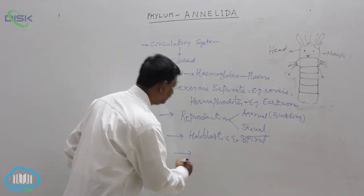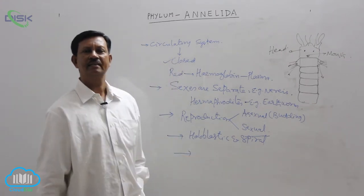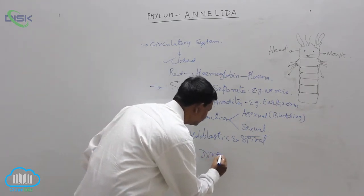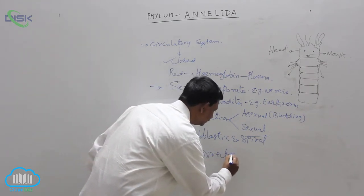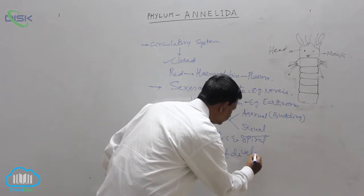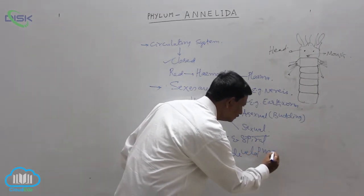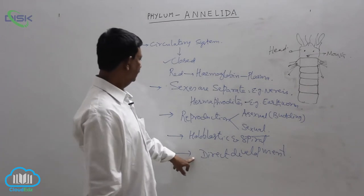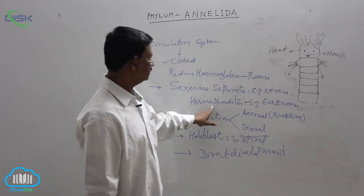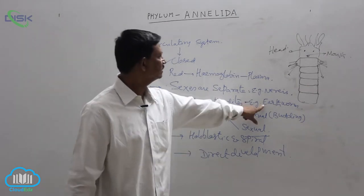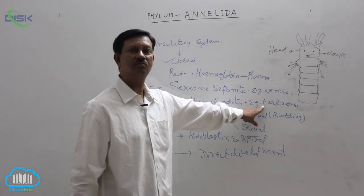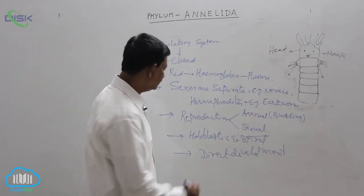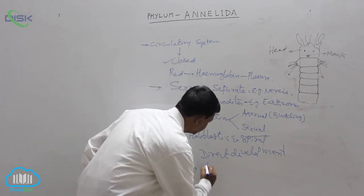Development is both direct and indirect. Direct development is present in hermaphrodites — monoecious animals, for example earthworm and leech — there is no larval form. In some animals, indirect development also takes place.